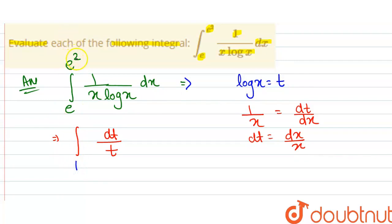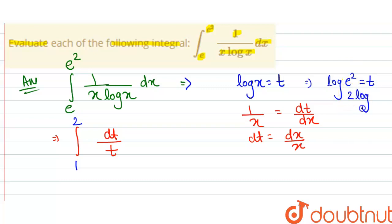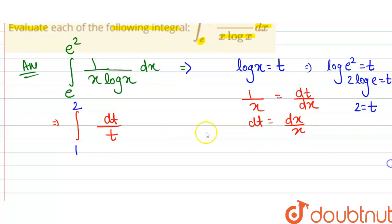For the upper limit, putting x = e², we get t = log(e²) = 2·log e = 2, since log e = 1. So the new limits are from 1 to 2, and the integral becomes ∫(1 to 2) dt/t.